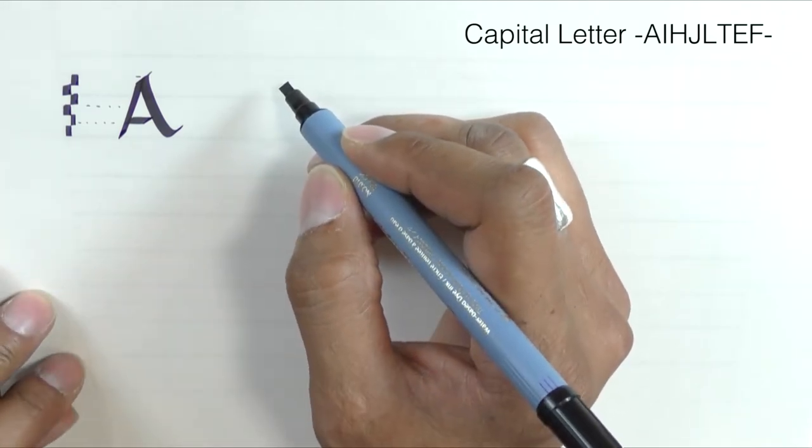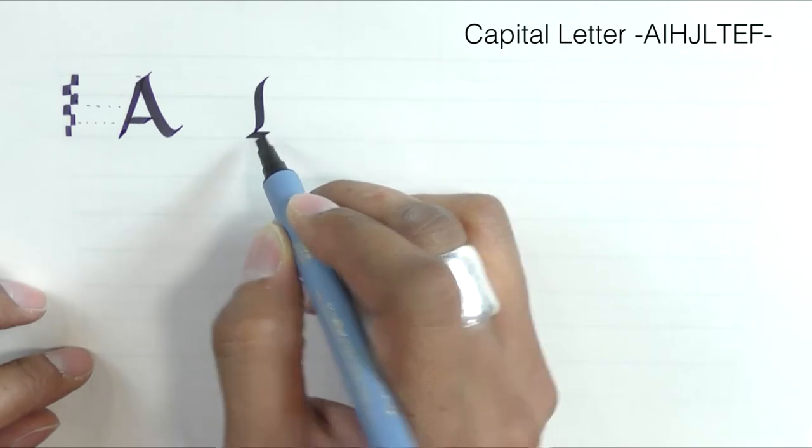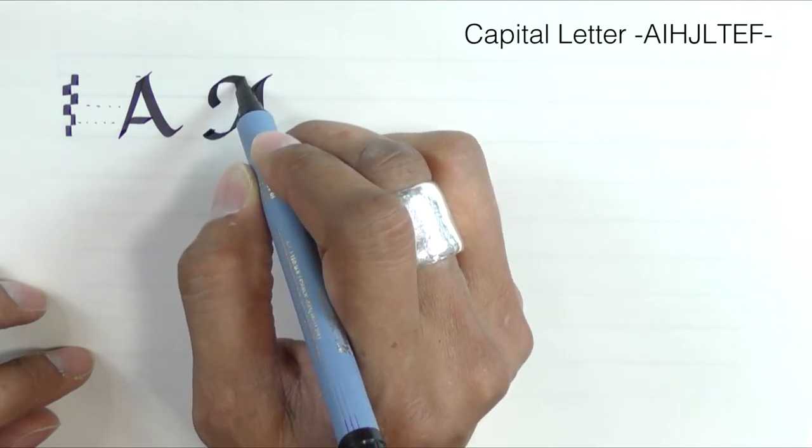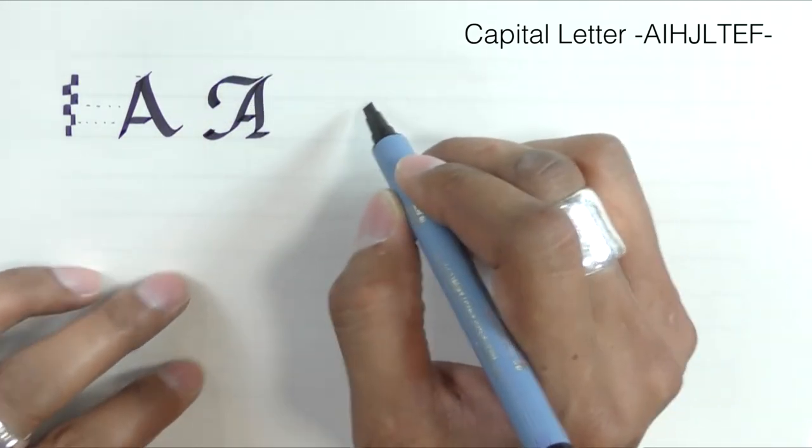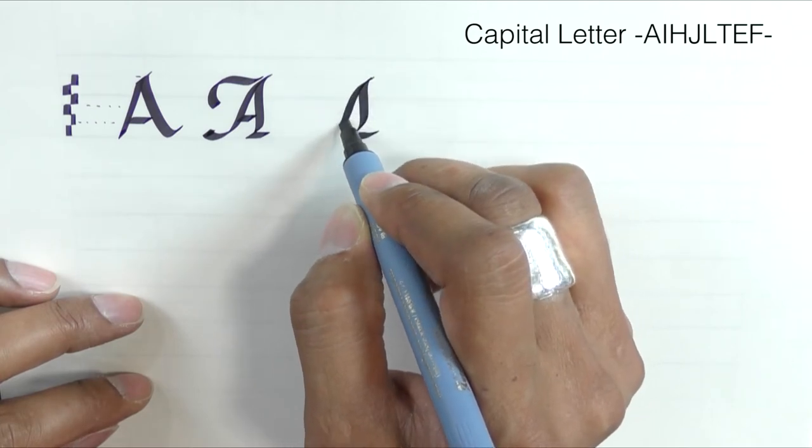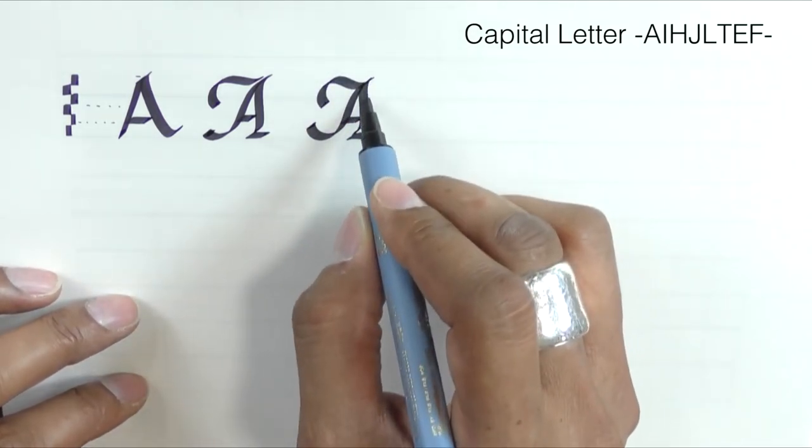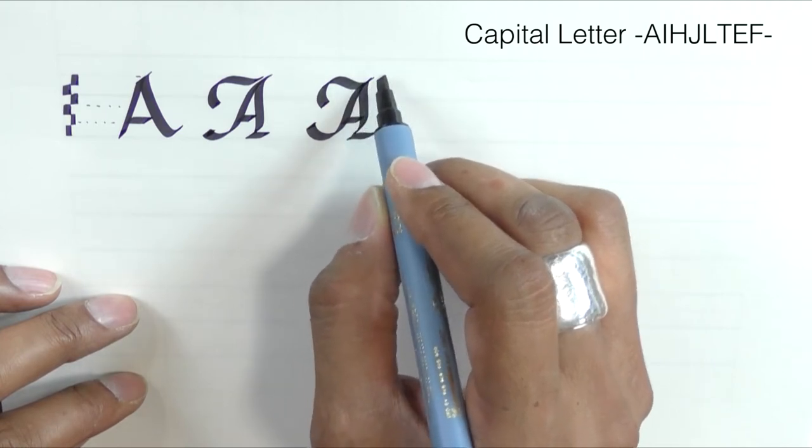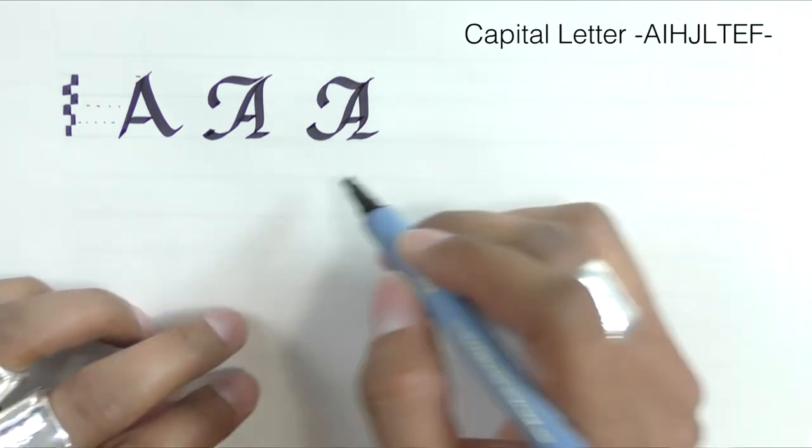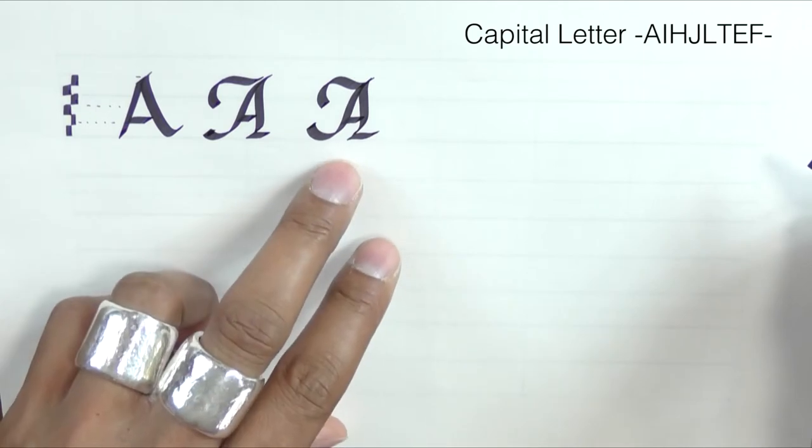The swash capitals have a different stem and this swash flourish stem can connect to the letter itself. Notice how these three strokes—one, two, and three—all go into a very narrow edge. So that's the basic structure for the plain letter and the swash letter.